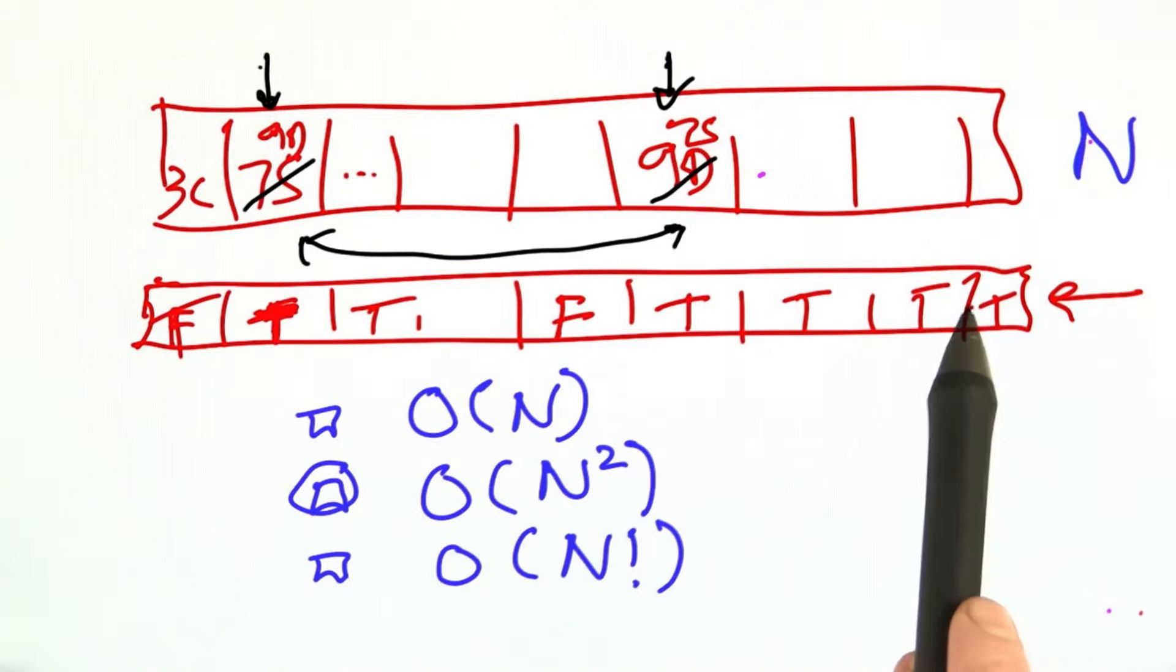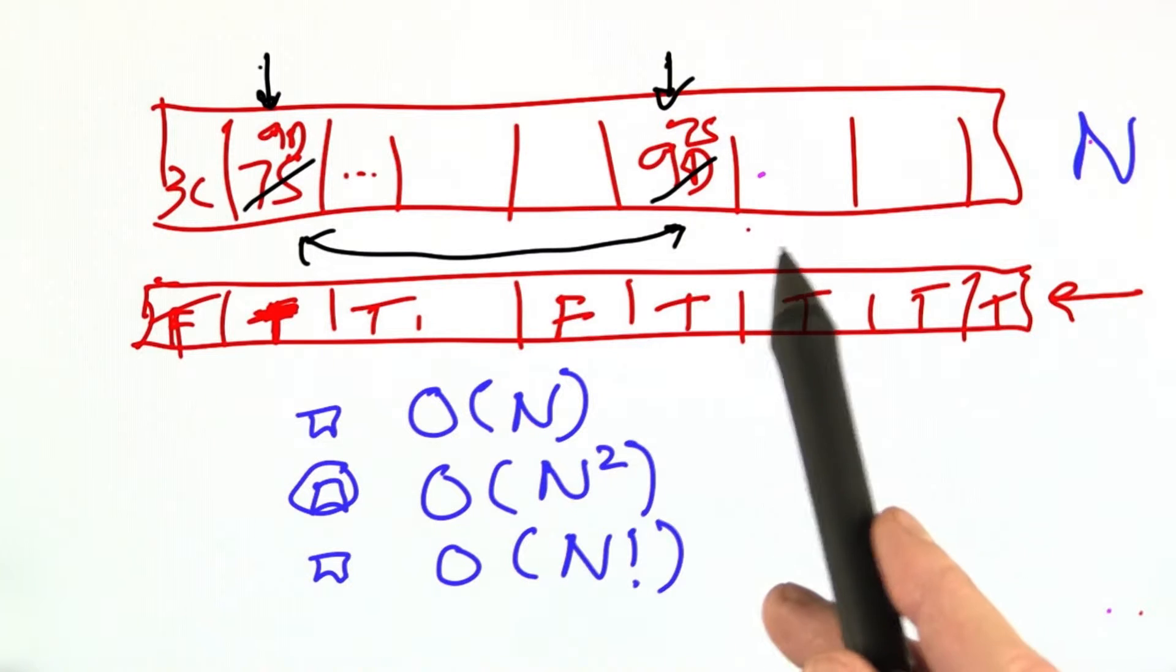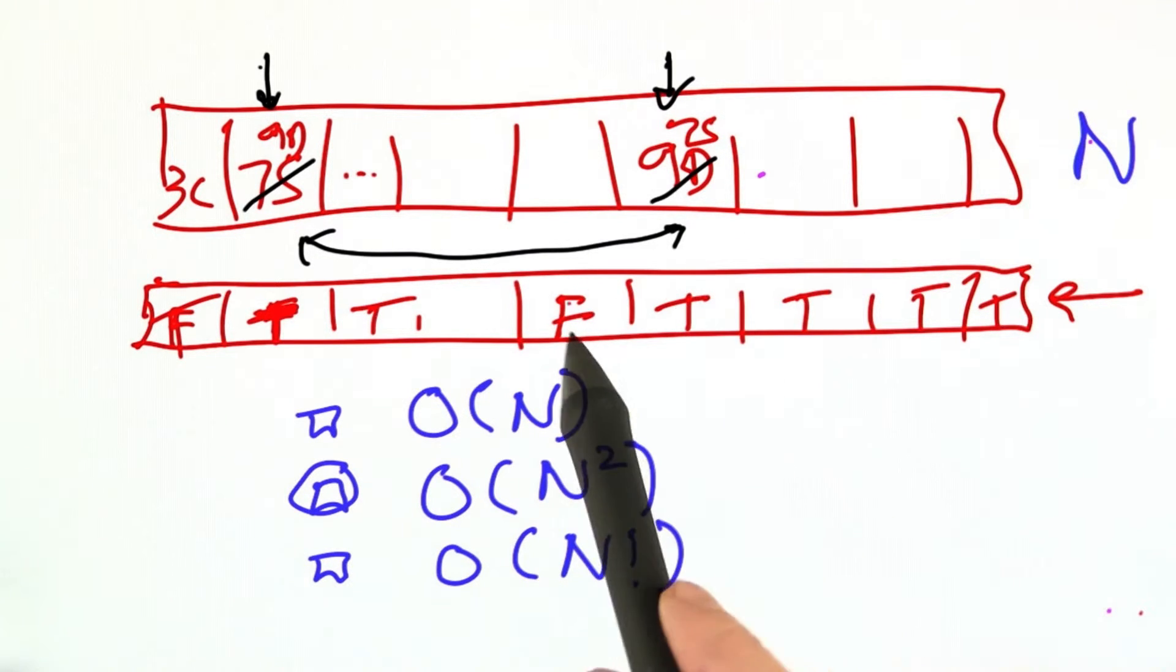And the answer is there's n of these, and each time we're going through and we're generating indices, so it's going to take about n random numbers before we get that.